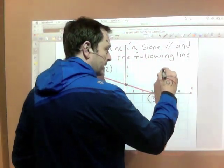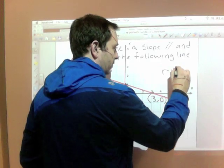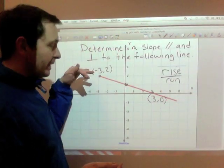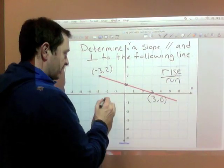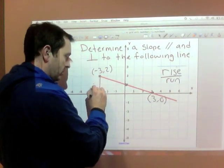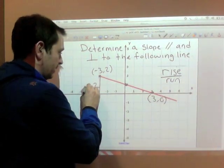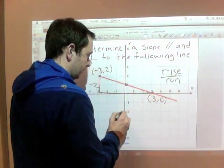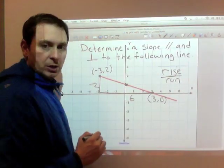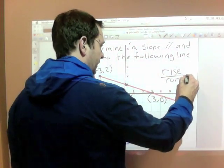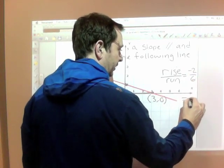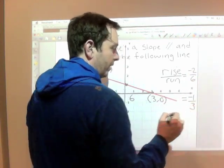Because remember, slope is rise over run. So how much is this rising or running? Well, it's going down. And how much is it going down? It's going down two. So it's negative. And it's running six. So our rise over run equals negative two over six. Reduce the fraction. Negative one third.